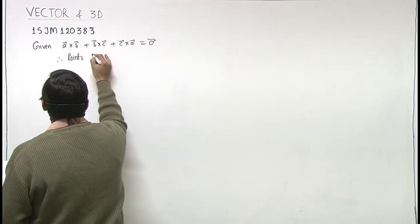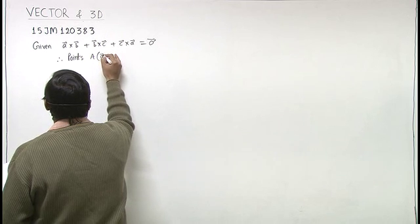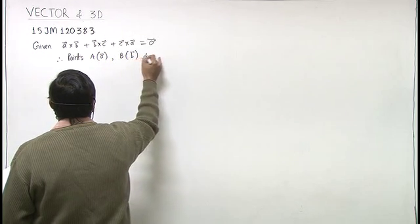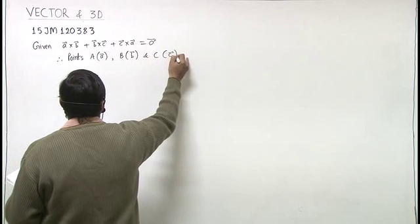Therefore points A with position vector a, B with position vector b, and C with position vector c are collinear.